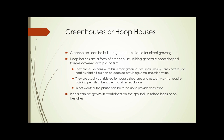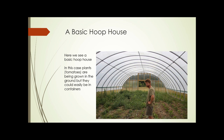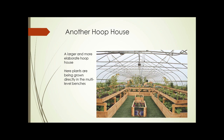The plants grown in greenhouses or hoop houses can be grown in containers set on the ground, in containers on benches, in raised beds, or directly in benches. This photograph shows a hoop house where plants are being grown directly in the ground, but they could easily be in containers instead. Here's another hoop house, a little fancier and more elaborate, where plants are being grown directly in multi-level benches filled with soil.